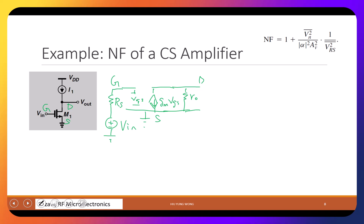The channel current noise is In² = 4kT·γ·GM — it's white noise. For a well-designed transistor we can ignore the gate noise. So in the exam, unless I say you need to add the gate resistor noise, you can ignore it. We'll also ignore flicker noise to save time.